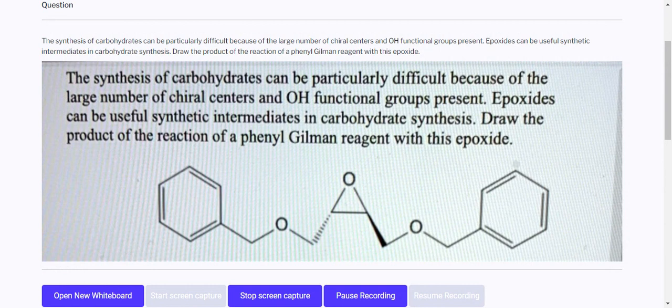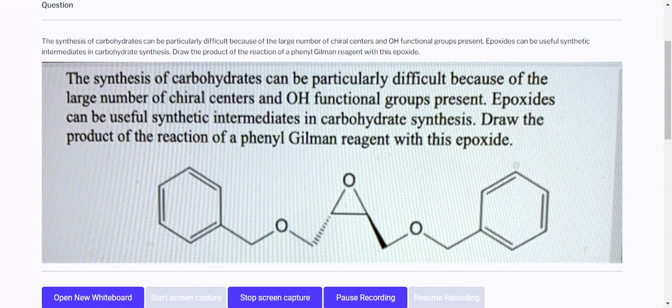Okay, so we have given this is the benzene ring, oxygen here. So how can we get this product with the Gilman reagent? Gilman reagent is R2CuLi, so both R groups will be...